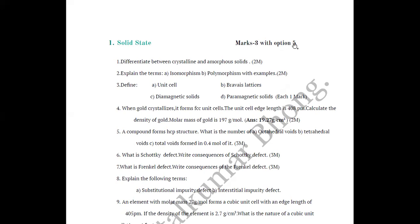The first question is: write the difference between crystalline and amorphous solids — four differences required, with an example such as sodium. The second question is: explain the terms (A) isomorphism and (B) polymorphism with examples, each having one mark. Define: (A) unit cell, (B) lattice, (C) diamagnetic solids, (D) paramagnetic solids — each one mark.